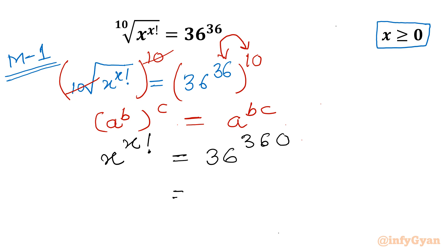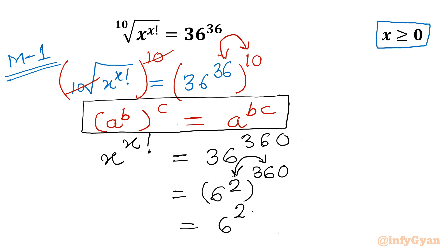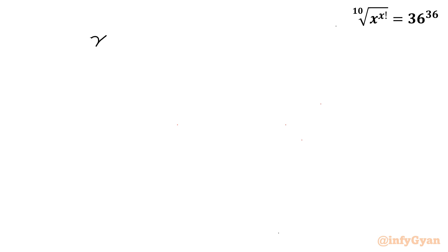Now I will write 36 as 6 squared, with power 360. Using the same exponent law, this becomes 6 raised to the power 2 times 360, which further simplifies to 6 raised to the power 720. So x raised to the power x factorial equals 6 raised to the power 720.